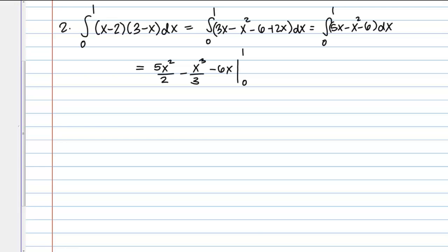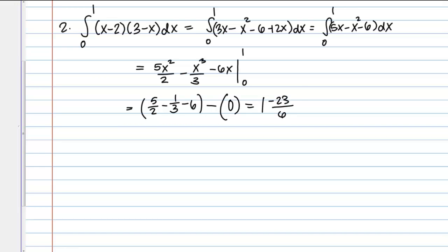My final answer is going to be a number. I start by plugging in 1 to this entire expression — make careful use of parentheses and brackets. Plugging in 1 gives 5 halves minus 1 third minus 6. Then I subtract and plug in 0, but plugging in 0 gives just 0. So I end up with 5 halves minus 1 third minus 6, which gives a final answer of negative 23 over 6 — the net area under this function on the interval from 0 to 1.